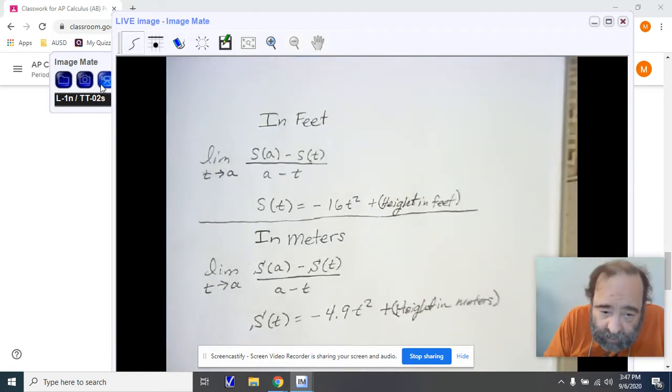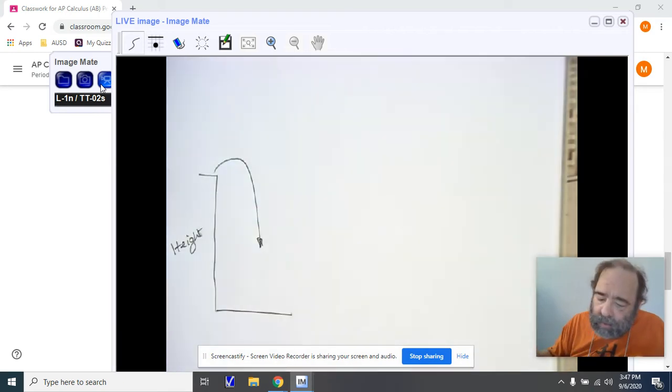In meters, we're using the same formula. But now, the formula for the movement is s(t) equals minus 4.9t squared plus the height in meters. So let's take a look and see how this is going to work.